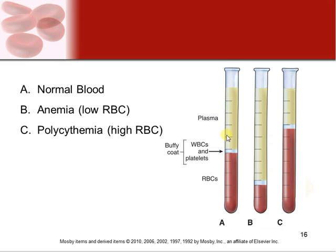Normal blood has a composition of about 55% plasma and 45% formed elements, with just a small fraction being white blood cells and platelets compared to red blood cells. Anemia is when you have a low red blood cell count. Polycythemia — where 'poly' means many — is when there is a dramatically high number of red blood cells, which can be seen in a separated test tube.